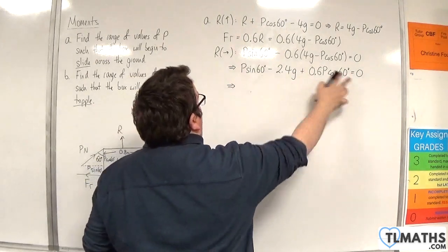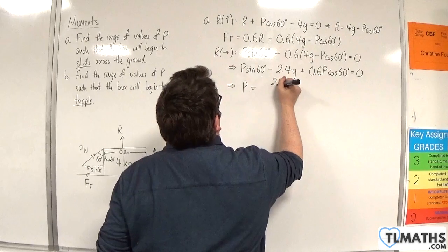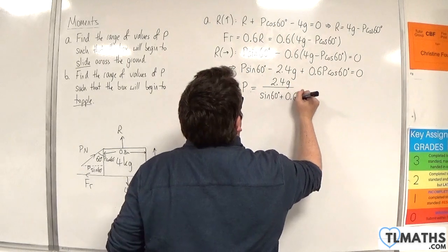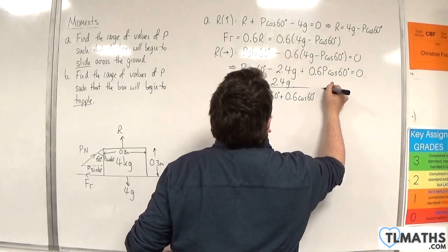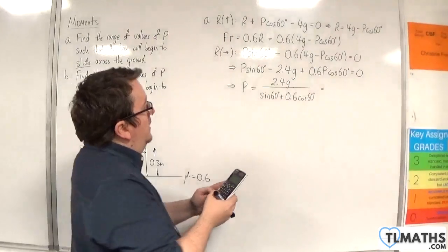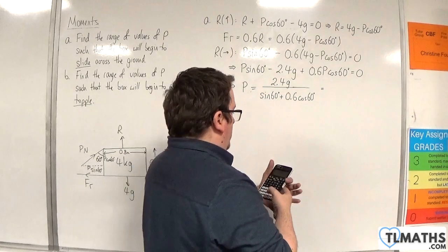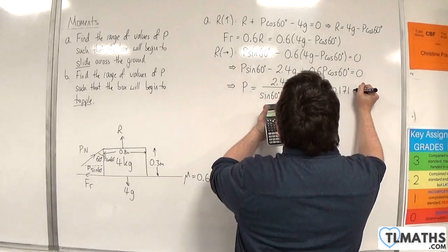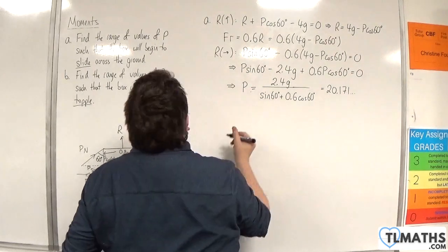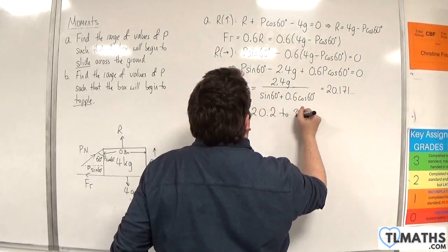Adding 2.4g to the other side, factoring out P and dividing through by the bracket, I get P equals 2.4g divided by (sine 60 plus 0.6 cosine 60). That gives 2.4 times 9.8 divided by (sine 60 plus 0.6 times cosine 60), which equals 20.171. So for P to cause the box to begin to slide across the ground, P must be greater than 20.2 Newtons, to three significant figures.